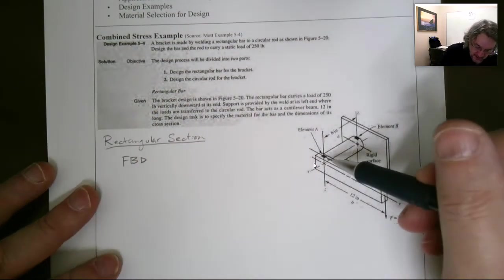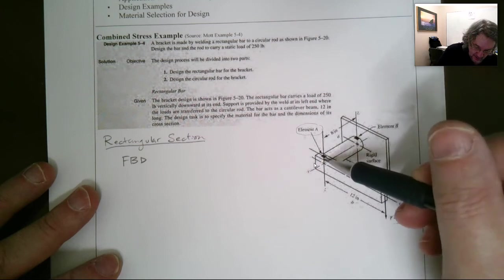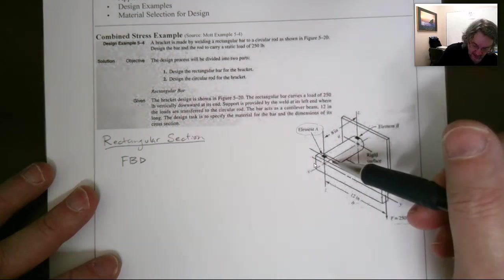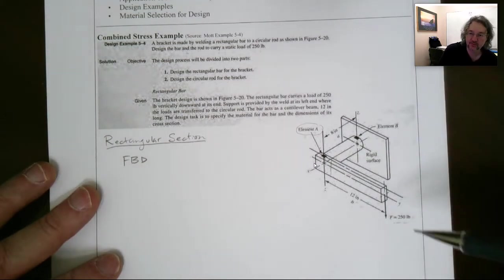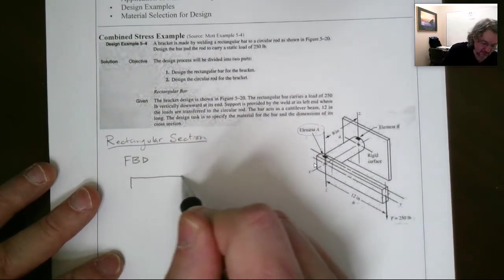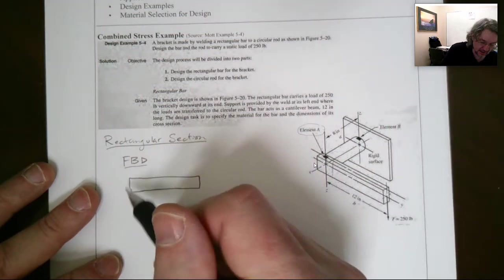And we're going to make an assumption that we're going to take a stress. They already show us a stress element at A right here. We could make the case that this is sort of like cantilevered. And it's really over to the side over here. But we're just going to do it from the center. It'll be a little bit more conservative.